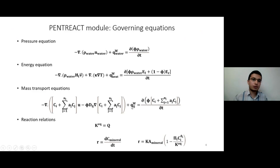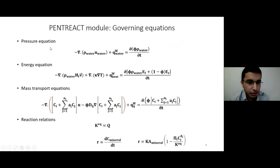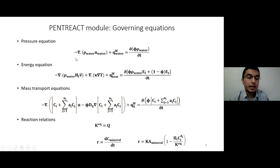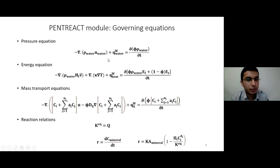I developed a module in MRST called PENTREACT. Let's talk about the governing equations used. First, we have the pressure equation, which is the mass conservation equation of the dominant species. In this case, assuming CO2 is injected into an aquifer, completely dissolved in water, and the acidified water moves toward the cap rock — the dominant species is water, and the minor species are chemical species like calcium, magnesium, and carbonate. These minor species don't significantly affect flow, so their effect is considered negligible. This equation calculates the pressure distribution in the reservoir, which is why I call it the pressure equation.